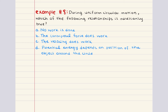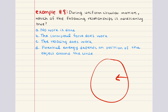Answer choice A says no work is done. This statement is true in uniform circular motion. Work equals force times displacement times cosine theta. In uniform circular motion, the centripetal force acts perpendicular to the displacement at all times — the force is directed towards the center of the circle while the displacement is tangent to the circle. Since the angle between force and displacement is 90 degrees, cosine 90 degrees equals zero, so work equals zero. No work is done by the centripetal force.